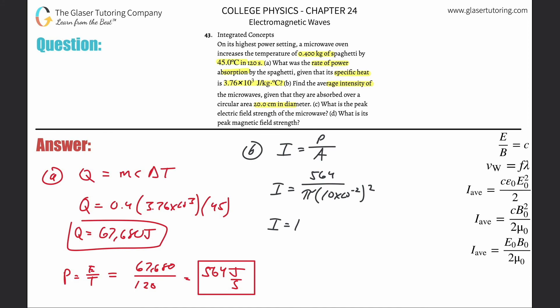So there's 564 divided by pi times 10 times 10 to the minus 2 squared. And we get an intensity here of about 1.80 times 10 to the 4 watts per meter squared.